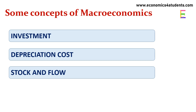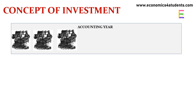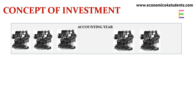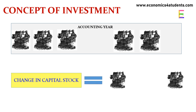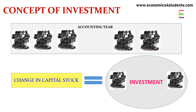First, what is investment? Suppose initially there are three machines, so we can say capital stock is three machines. At the end of a financial year, two more machines are purchased. Therefore, change in capital stock is five minus three, that is two machines.